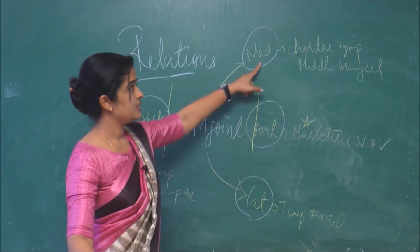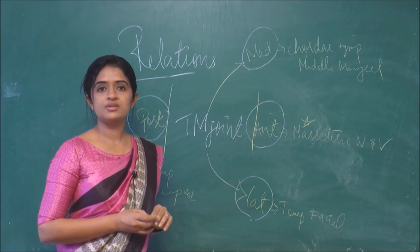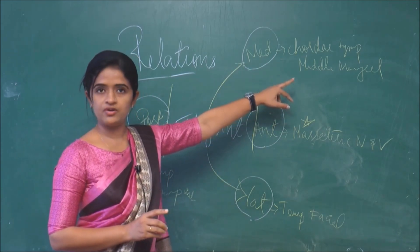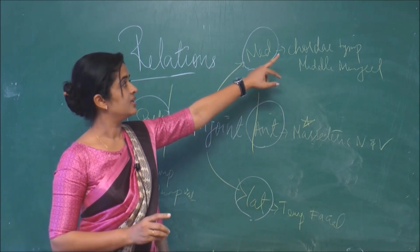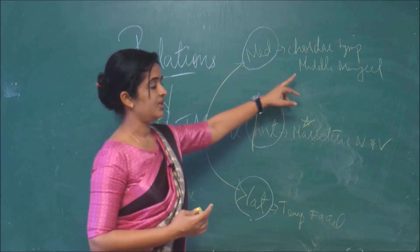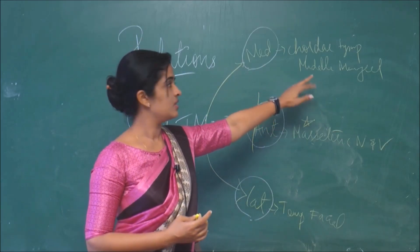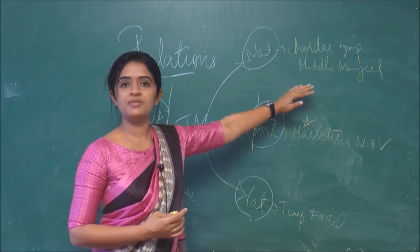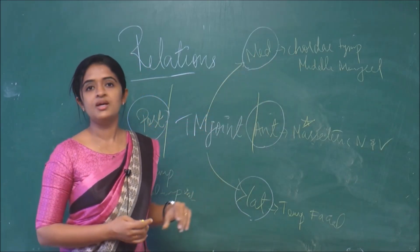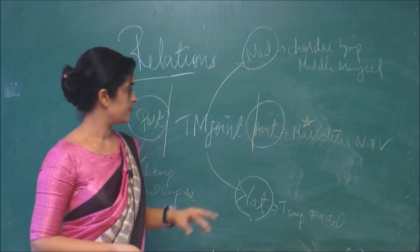Medially speaking, what are the components? The main things are one nerve and a vessel, as already mentioned. The nerve being the chorda tympani and the vessel being the middle meningeal vessels. So the chorda tympani nerve and the middle meningeal vessels come as relations at the medial aspect of the temporomandibular joint.